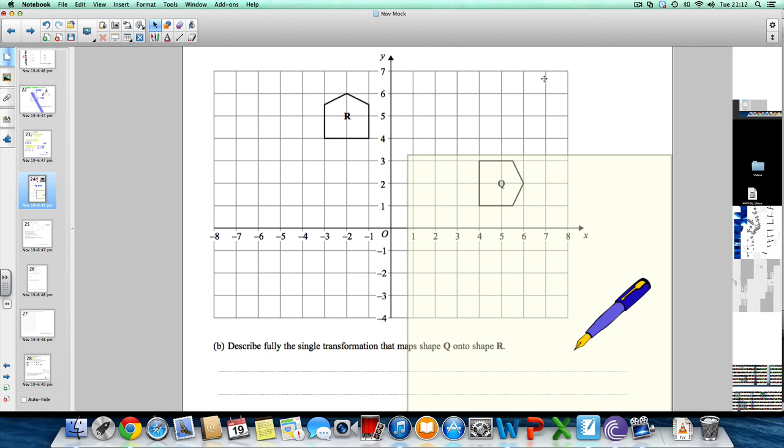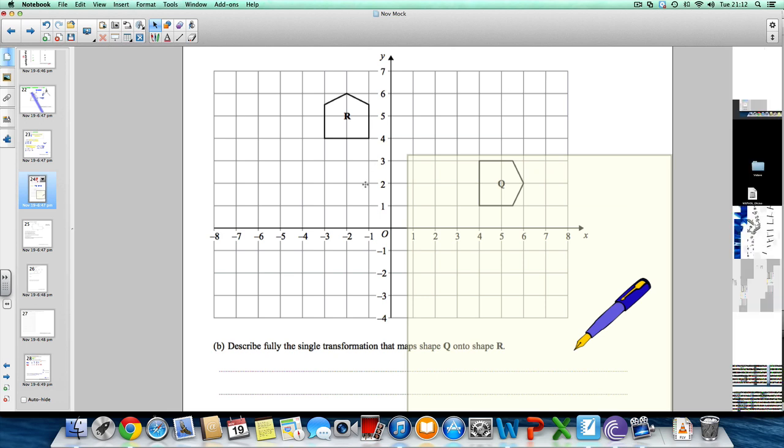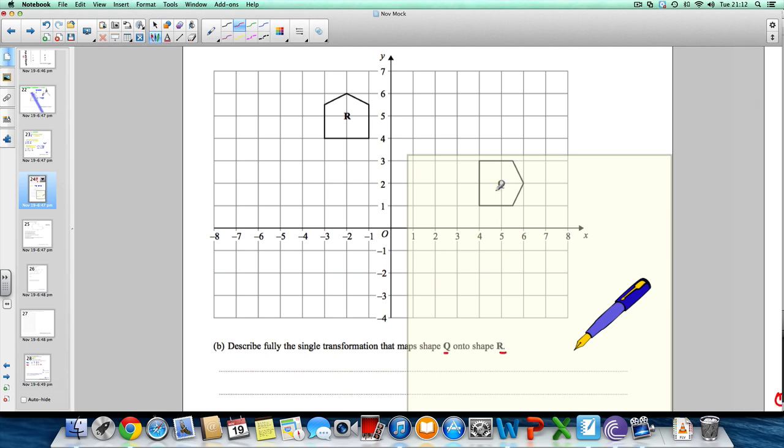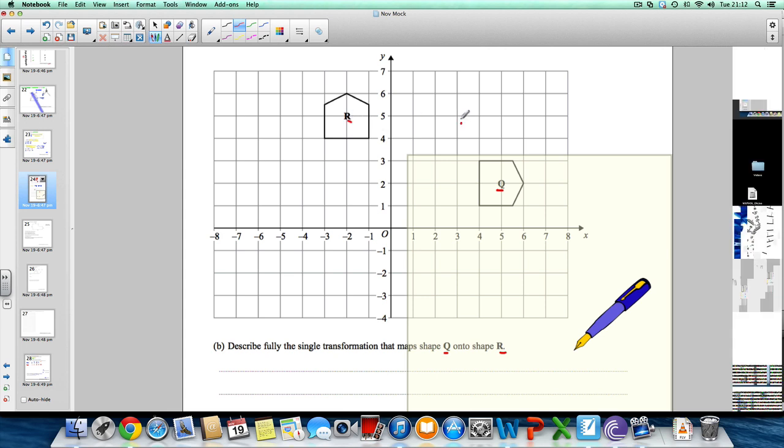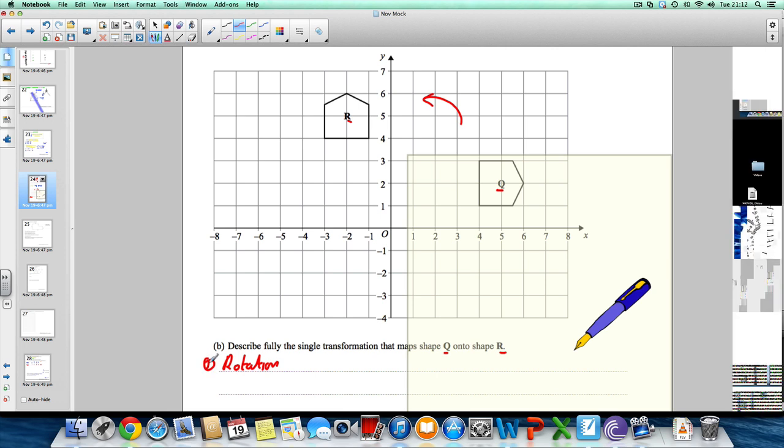The next part asks us to describe fully the single transformation that maps Q to R. We're going from Q to R, from here to here. You can see that the shape is turning on its side, so you're immediately thinking it's a rotation. That will get you one mark for saying rotation.